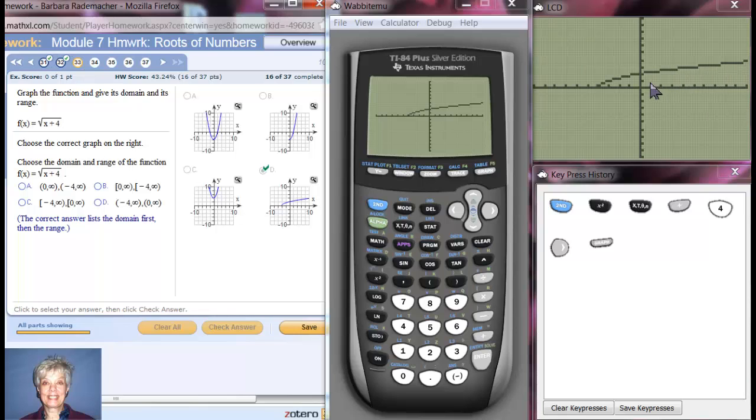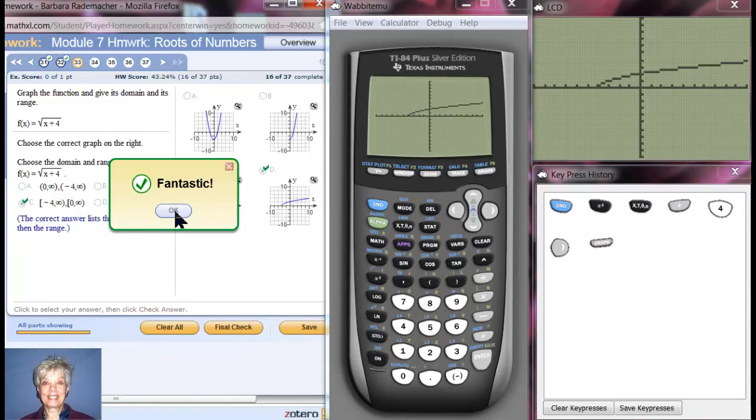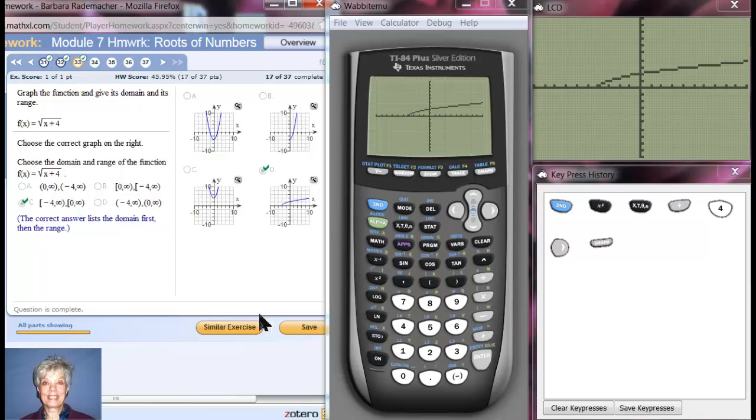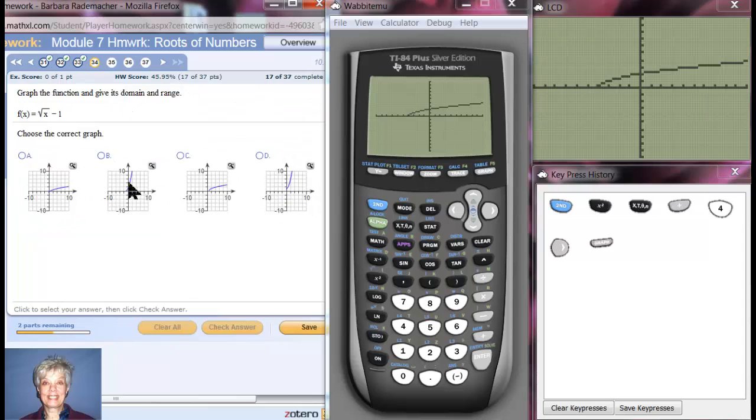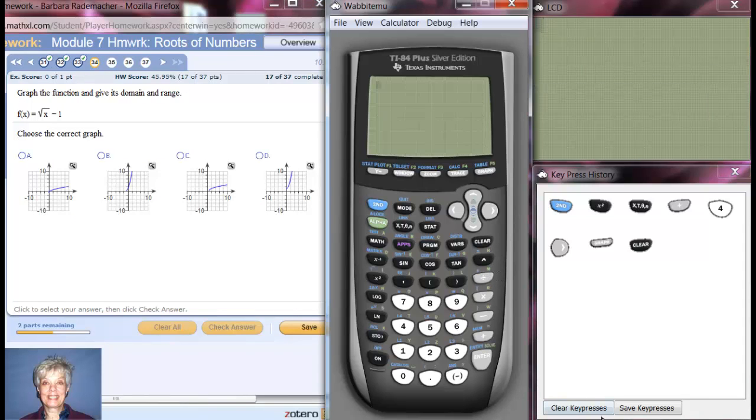And the range is going to go from the y coordinate there which is 0 slowly up forever. So the y coordinates will be rising along the y axis as this goes out to the right but also up forever. So 0 to infinity is going to be your range, negative 4 to infinity will be the domain. I'm going to click this.